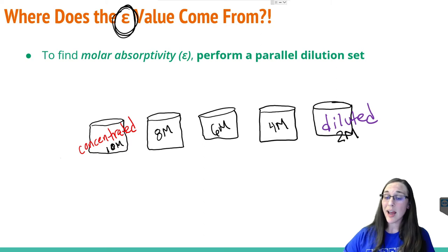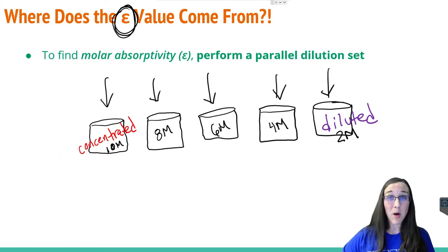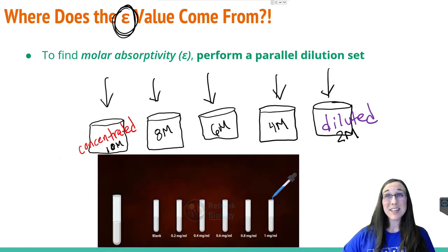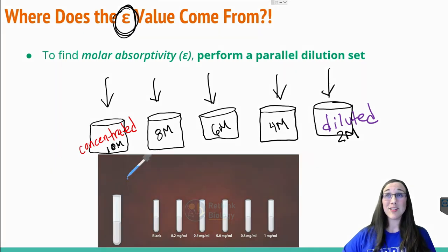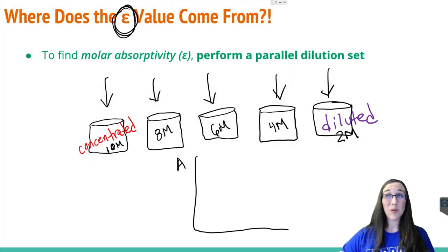And to make a calibration plot, I need to measure the absorbance of each one of these samples in order to plot that on my y-axis. So if I was to take a little bit of sample out of each one of these dilution set beakers, I can place that in my absorption spectrometer and create a graph that looks like this, where absorbance is on the y-axis and concentration in moles per liter, molarity, is on the x-axis.